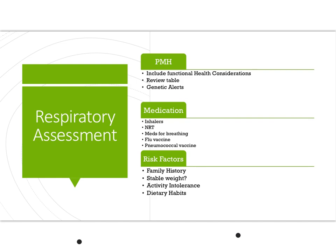When obtaining a respiratory assessment, make sure to do a thorough past medical history and obtain functional health considerations. Ask about current respiratory issues, history of respiratory disease, lifestyle, tobacco use, whether household members smoke, occupation, and exposure to pollutants. Also ask about the presence of a cough, any chest pain, risk factors, and medication history — including inhalers, SABAs versus LABAs, and nicotine replacement therapy.